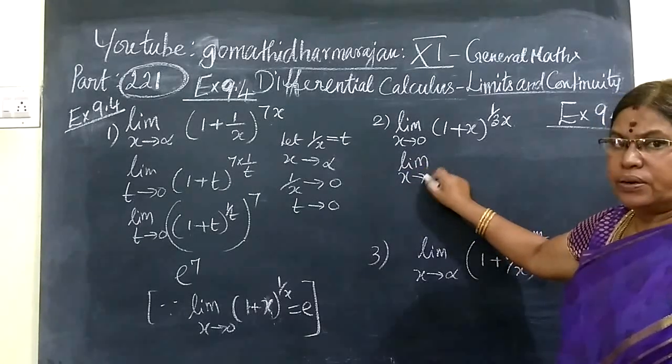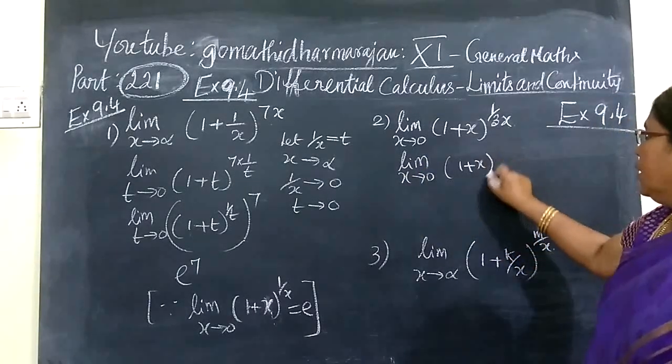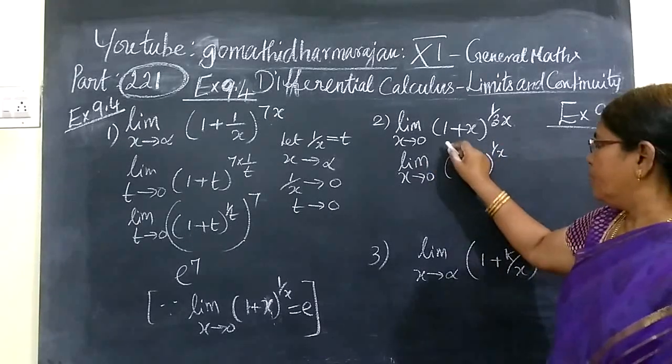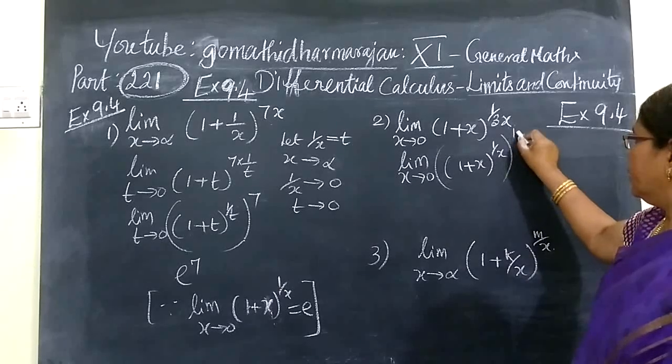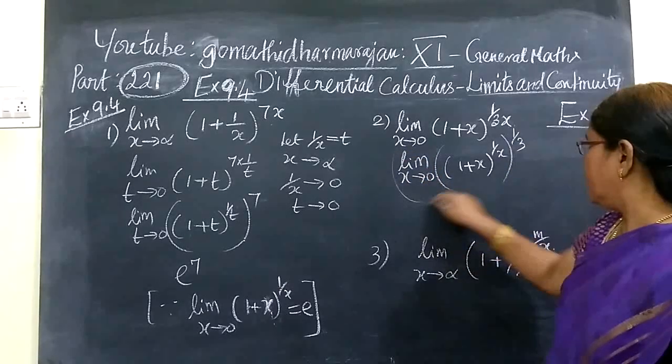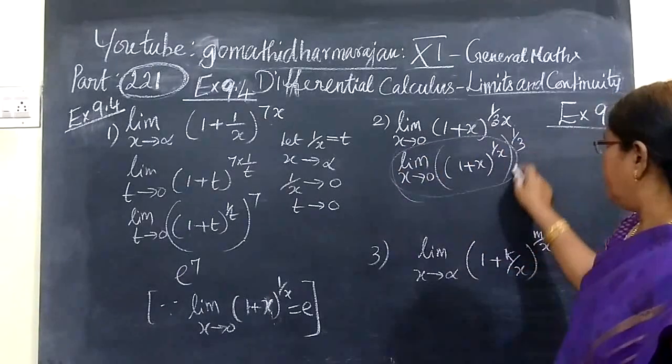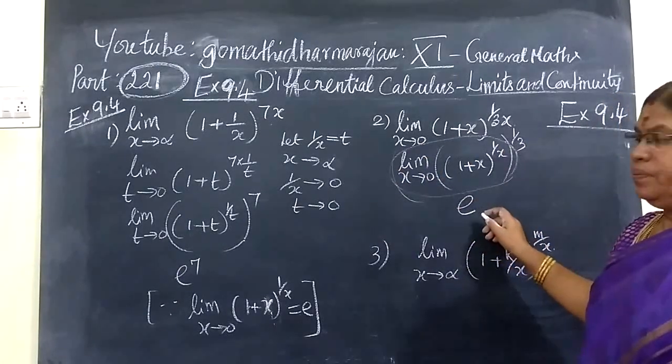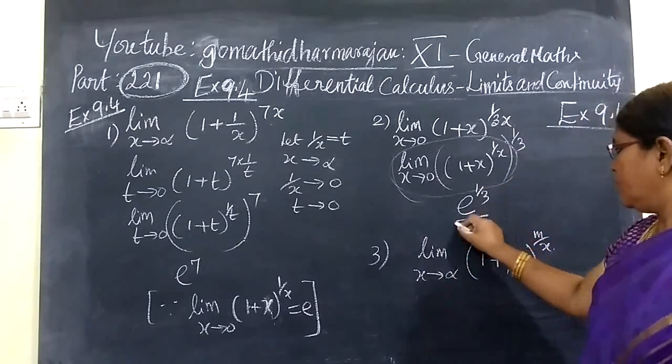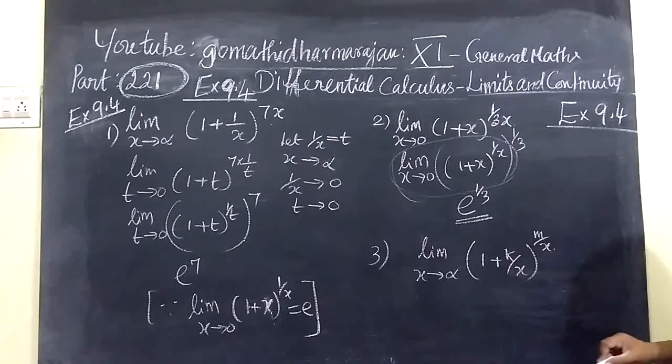Unless t tends to 0, 1 plus t, this is the power of 1 plus t, this is the power of 1 by 3. This is nothing but raised to 1 by 3. So the answer for this is e to the power of 1 by 3.